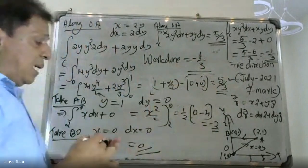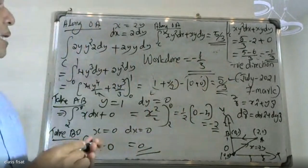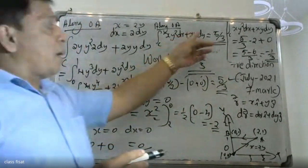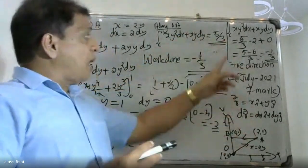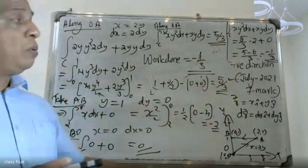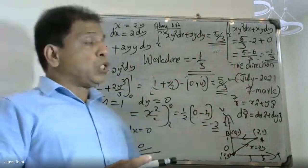The final answer is minus 1. That is 5 by 3 minus 2 times something plus 3 times 0, giving the total work done.